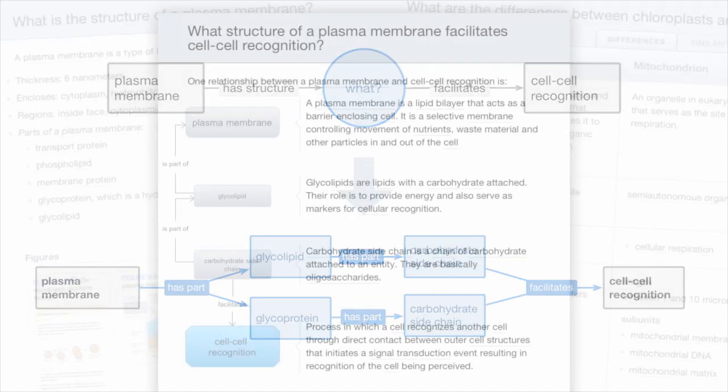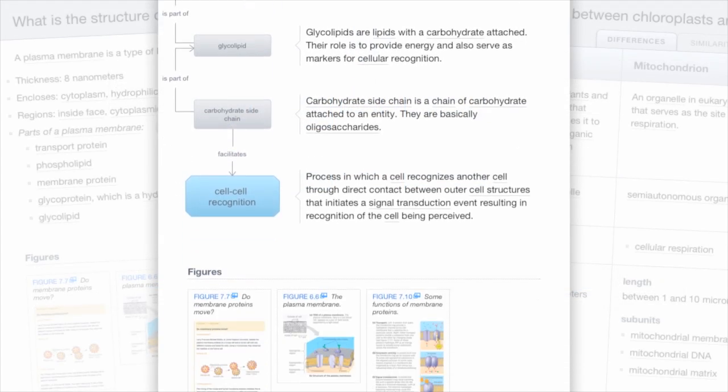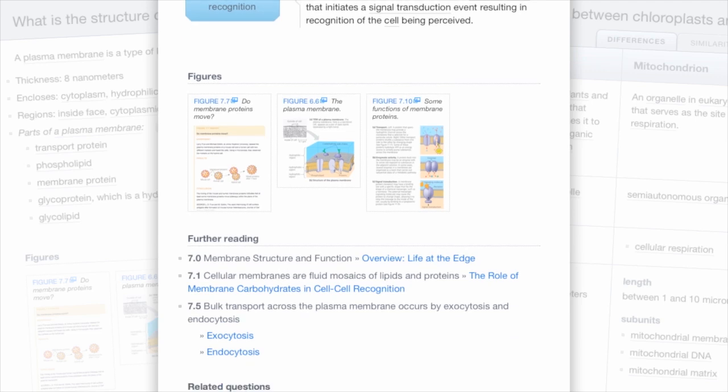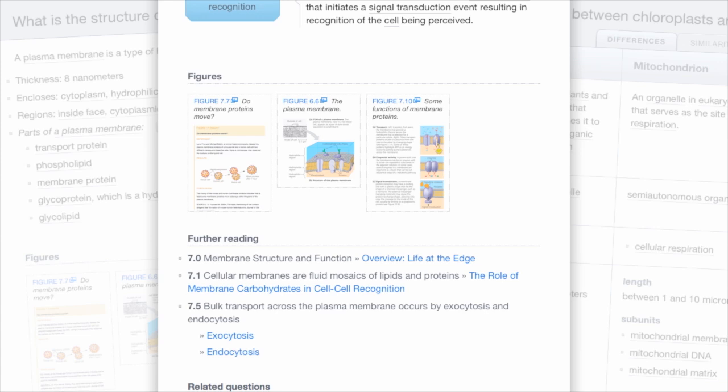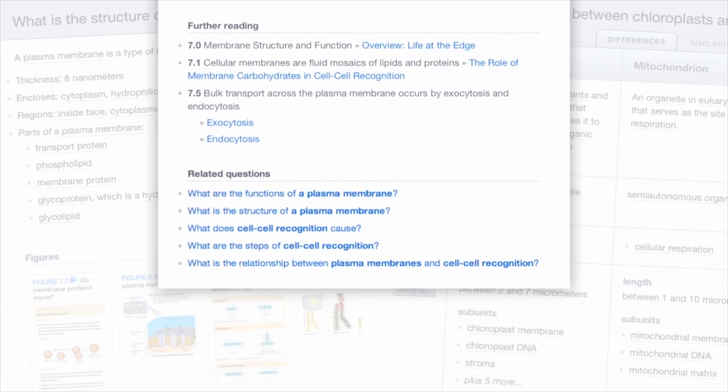The final step is presenting the answer using the most appropriate visual templates. Related images and sections from the book are linked using statistical text analysis, while follow-up questions are generated from predefined templates using relationships in the knowledge base.